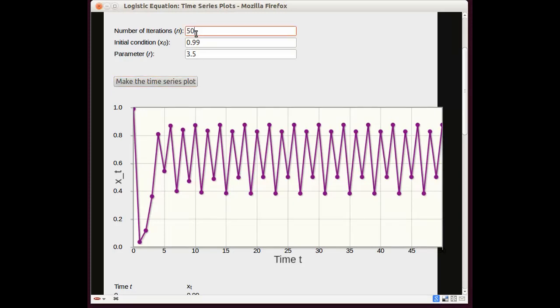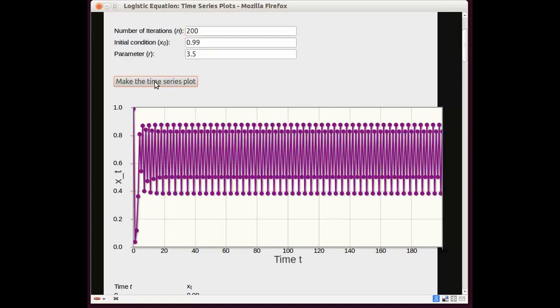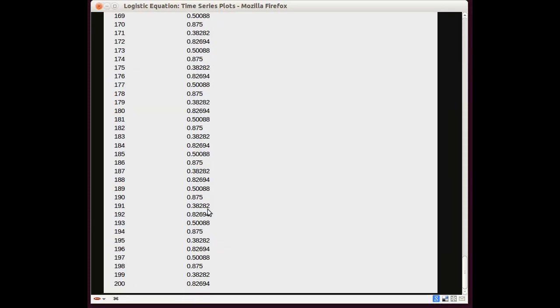This program will let you plot a lot of iterates if you want. So if you needed to see the really long-term behavior, you could do that. Here's 200 iterates. The graph gets kind of smooshed together, but again, you can see this regular pattern. 1, 2, 3, 4, back to where we started. And we can go down here and look at the table of numbers, and we can see that it is indeed repeating. The numbers are indeed repeating every 4. So for this r value, we have stable or attracting cycle of period 4.